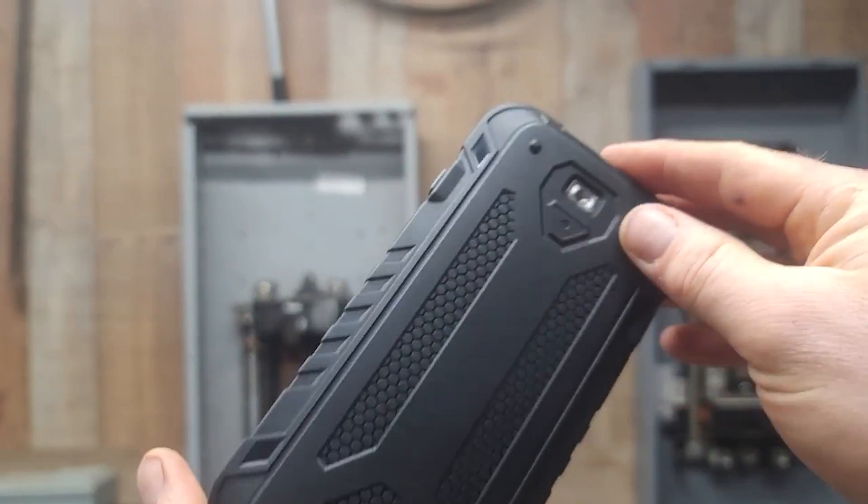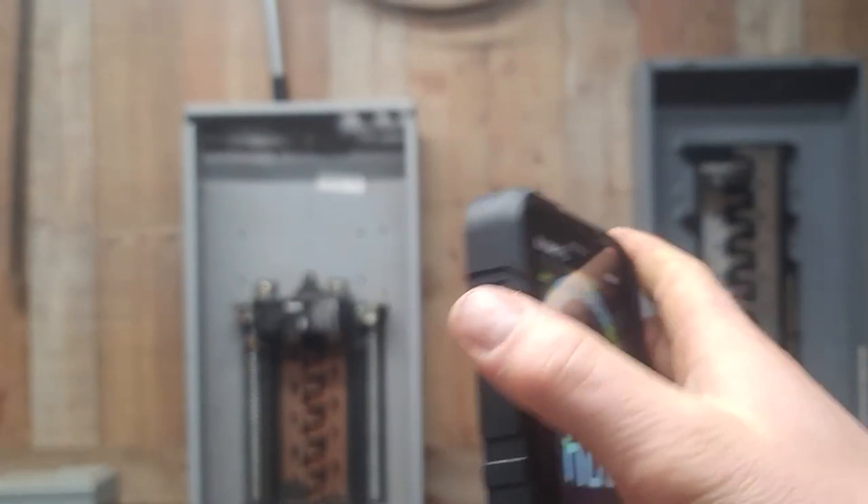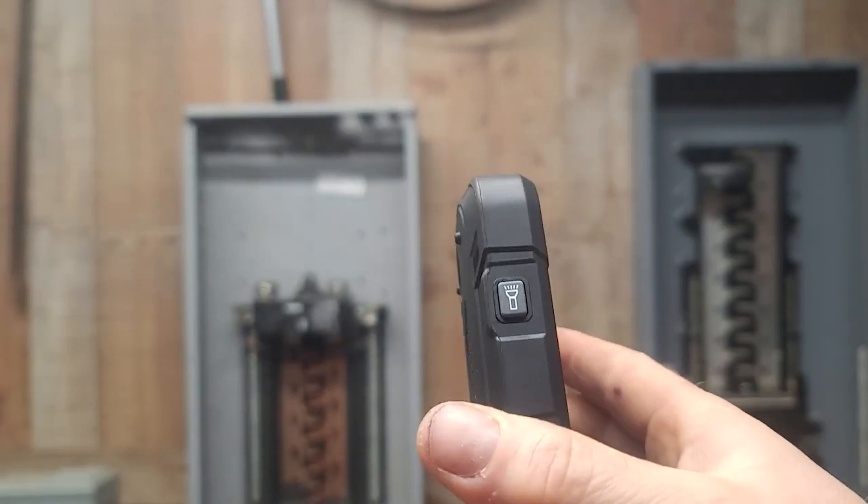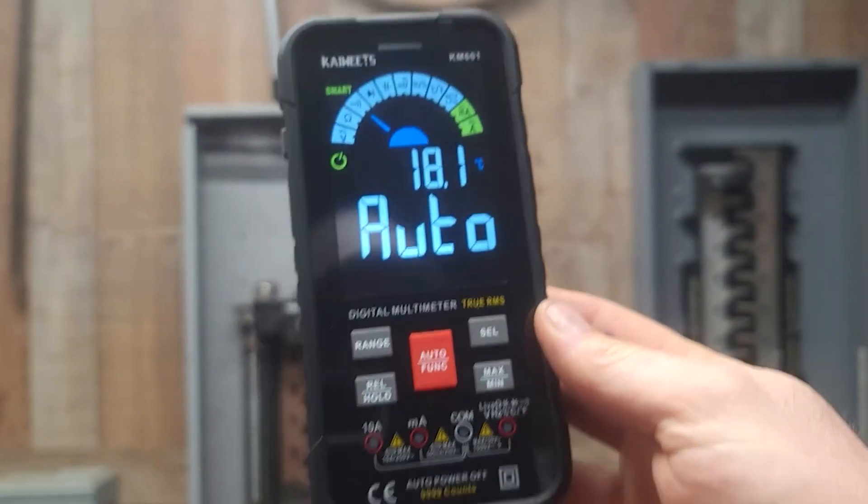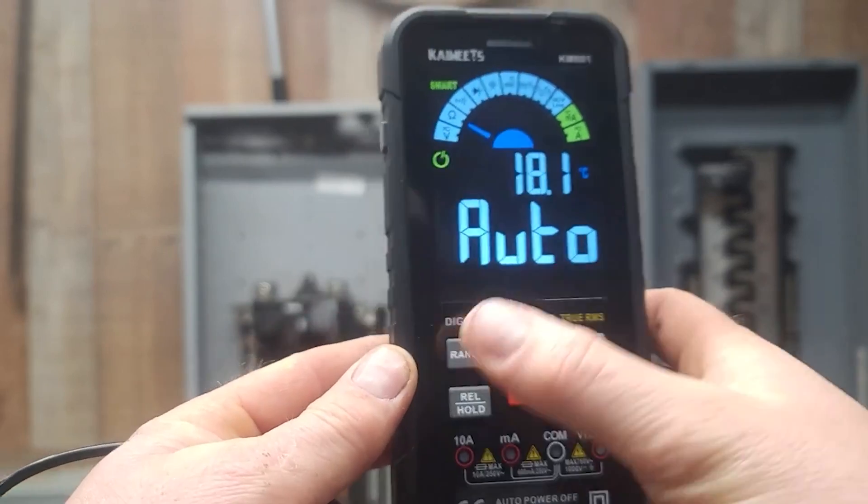Today's video is brought to you by Coyote's Digital Multimeter. This thing is bad to the bone, super rugged, even comes with a flashlight. Highly recommend it. You can pick up yours at Amazon.com. Check out Coyote's Digital Multimeter and thank you for sponsoring this video.